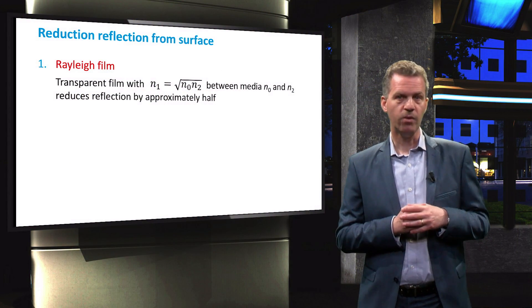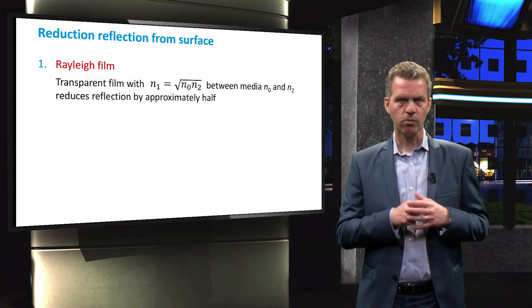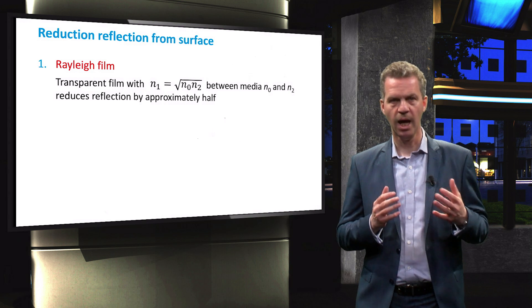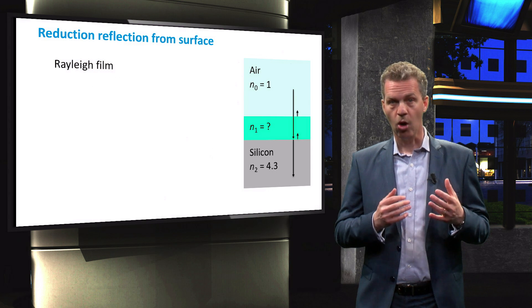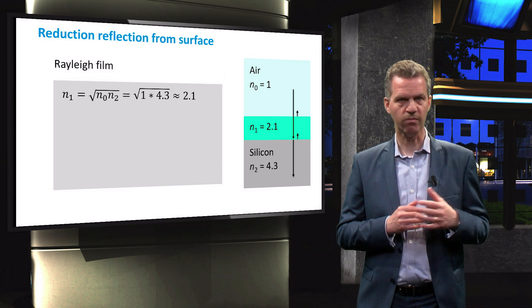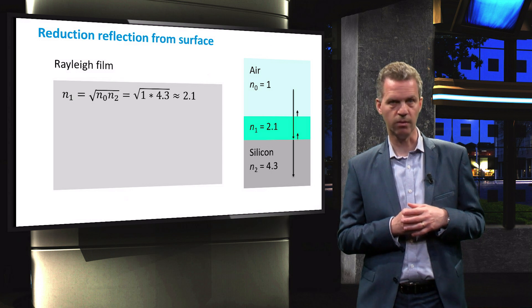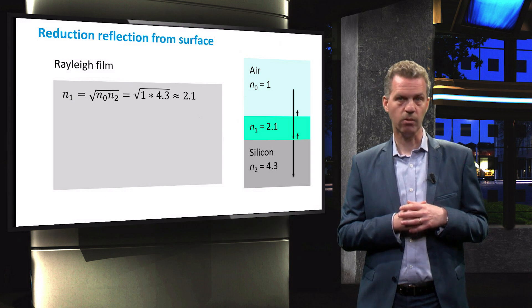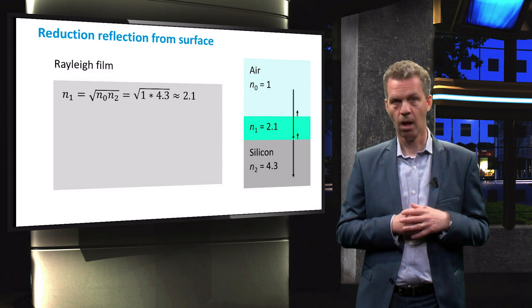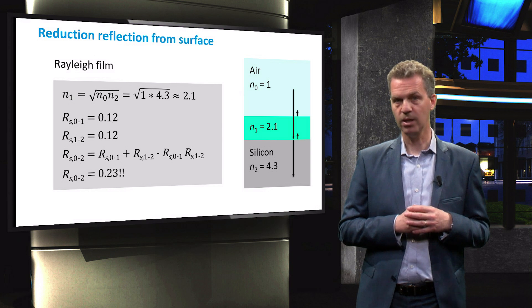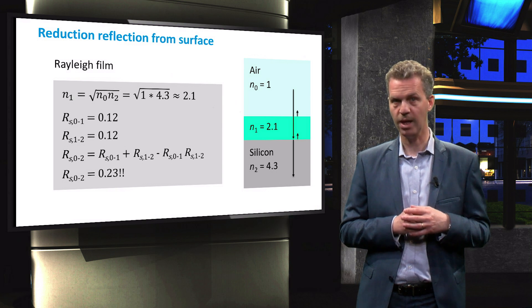The first approach is to design an anti-reflective coating. For this design we can follow two routes. The first route is by placing a Rayleigh film on the silicon surface such that the refractive index from air to silicon is more gradually increased. The optimal refractive index N1 of this medium can be calculated by taking the square root of the refractive index of air times the refractive index of silicon resulting in a refractive index of around 2.1. This principle was explained already in the PV energy conversion course. When we now calculate the total reflection on the silicon surface in two steps, we obtain a value of 23% instead of 39% without the Rayleigh film.